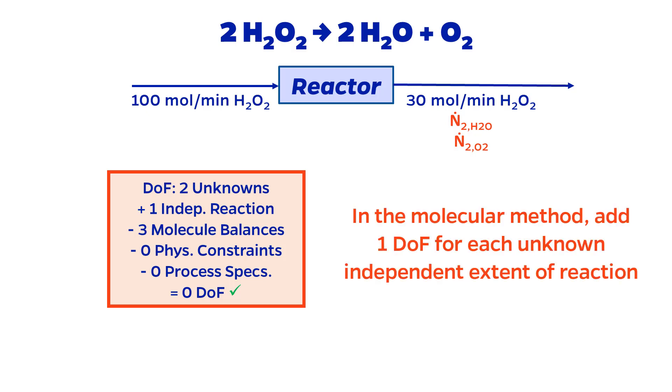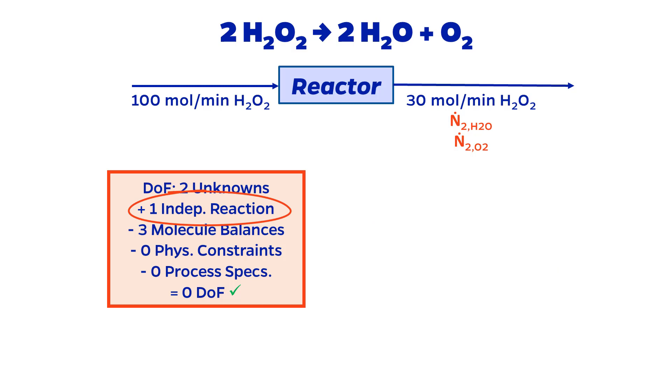Generally, for the molecular method you add a degree of freedom for each independent chemical reaction to reflect this. Accordingly, here we have to add 1 to the degrees of freedom.